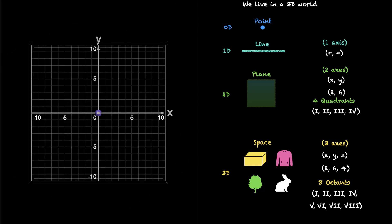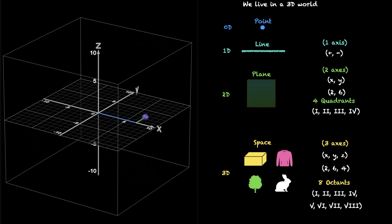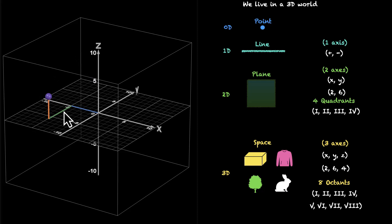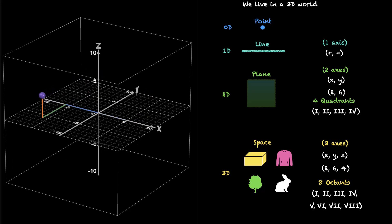Let's visualize this. When we have a point in 2D with positive X and positive Y, we're in the first quadrant. When we have X negative, we're in the second quadrant. When we have Y negative as well, we're in the third quadrant. And when we have X positive and Y negative, we're in the fourth quadrant. Similarly, when we move in 3D — with X positive, Y positive, and Z positive, going up along the Z axis — this is our first octant. Moving on the ground floor: when X is negative, that's the second octant. When both X and Y are negative but Z is positive, that's the third octant. Then X positive, Y negative, Z positive — that's the fourth octant. So we're moving anticlockwise: first, second, third, fourth octant.